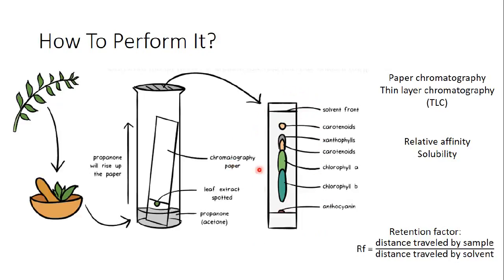This is how we perform and analyze paper chromatography. However, paper chromatography is a technique used only for analysis — we cannot purify using it, because we cannot isolate one substance from the others. We can only analyze them.